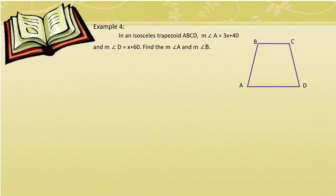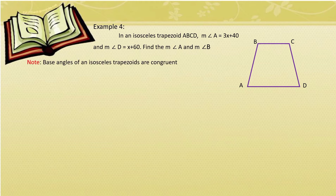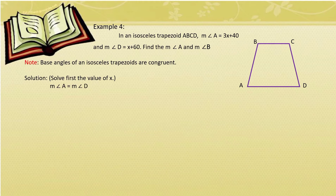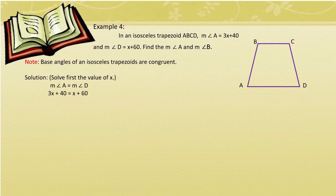Example number 4. In isosceles trapezoid ABCD, measure of angle A = 3X + 40° and measure of angle B = X + 60°. Find the measure of angle A and measure of angle B. Remember that base angles of an isosceles trapezoid are congruent. The bases are BC and AD, so the base angles are angle B and angle C, and also angle A and angle D. Since angle A equals angle D, set 3X + 40 = X + 60.